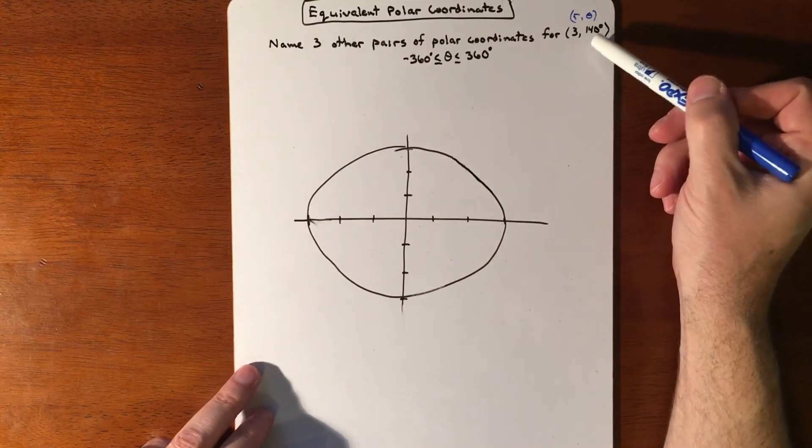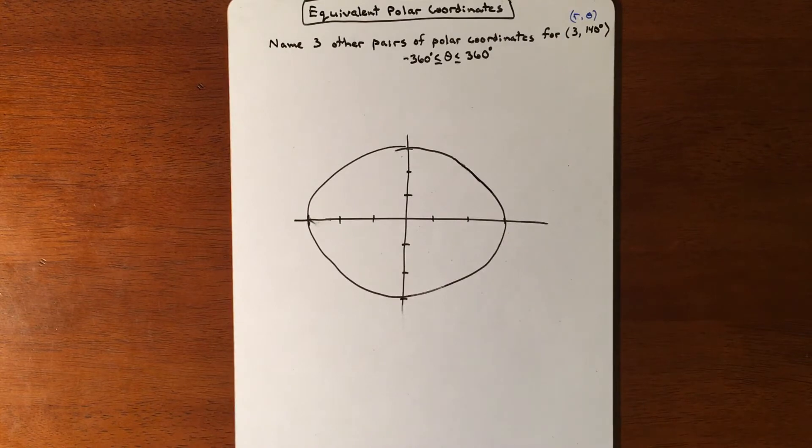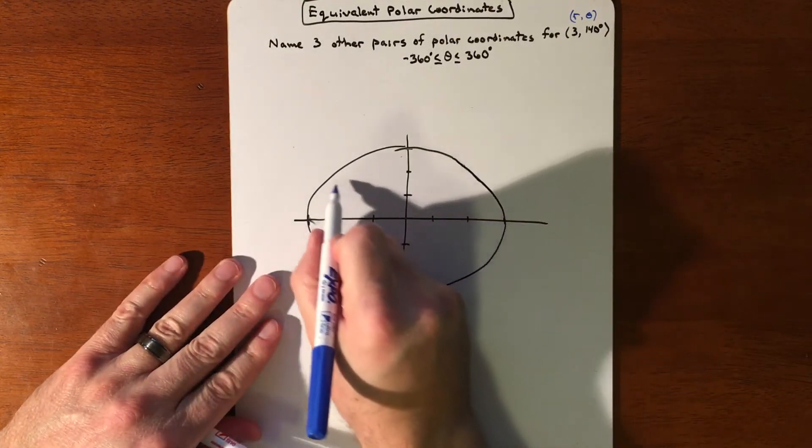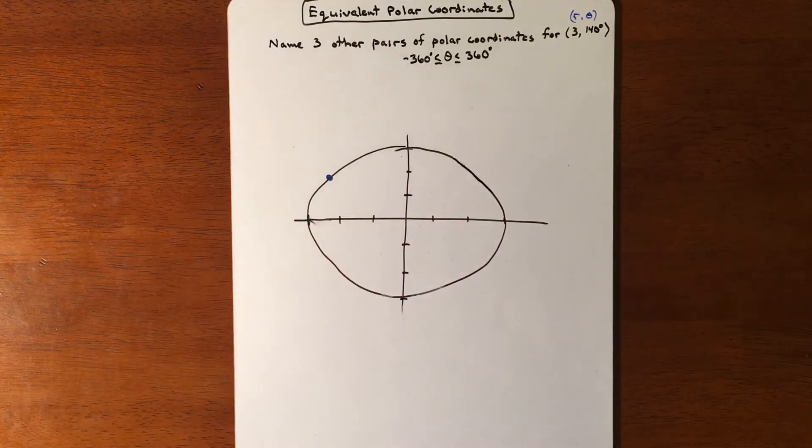And then I want to plot the point 140. So 140 is going to be, let's see, this is 80. So somewhere around there. Let's do this in red.